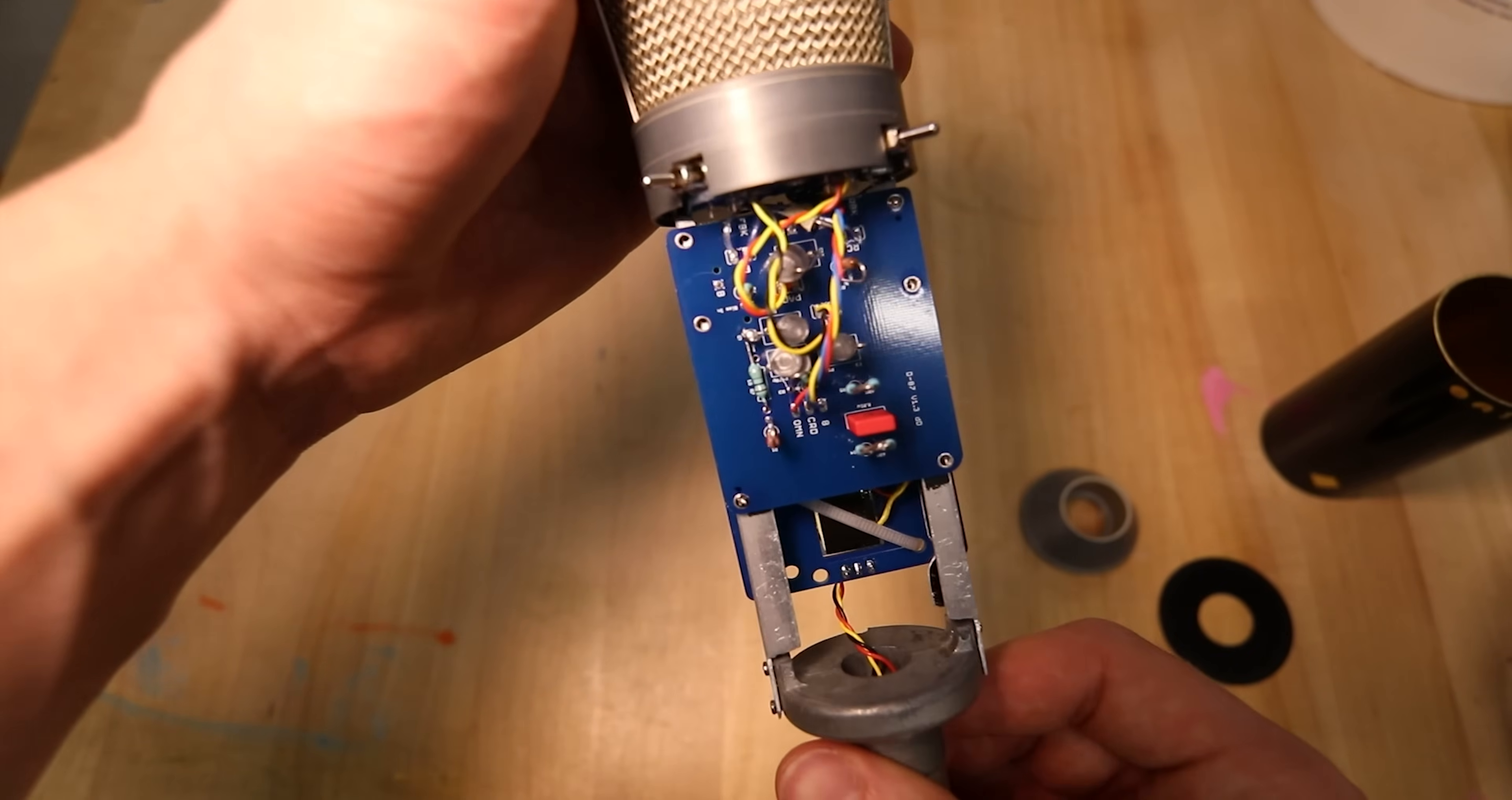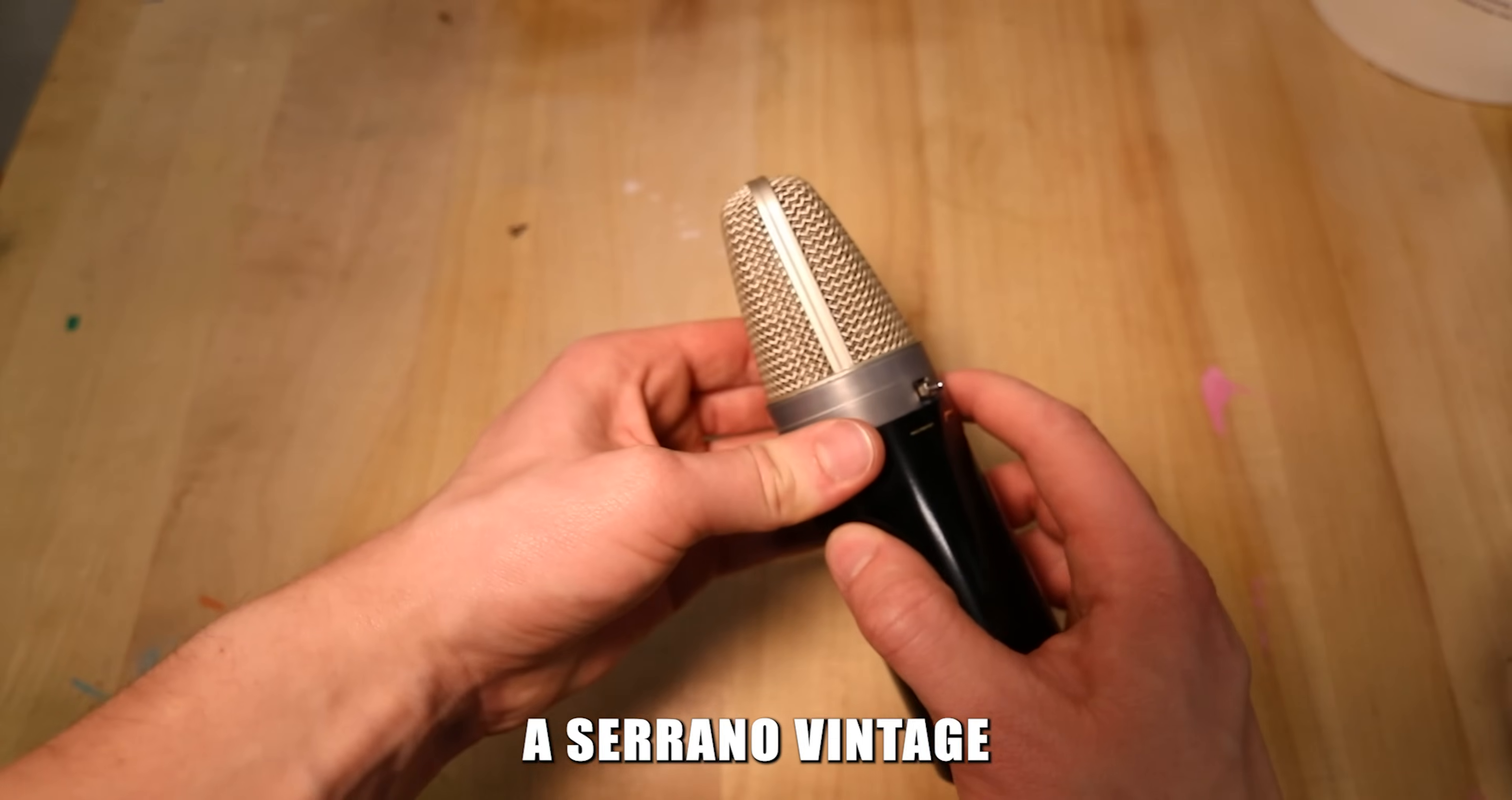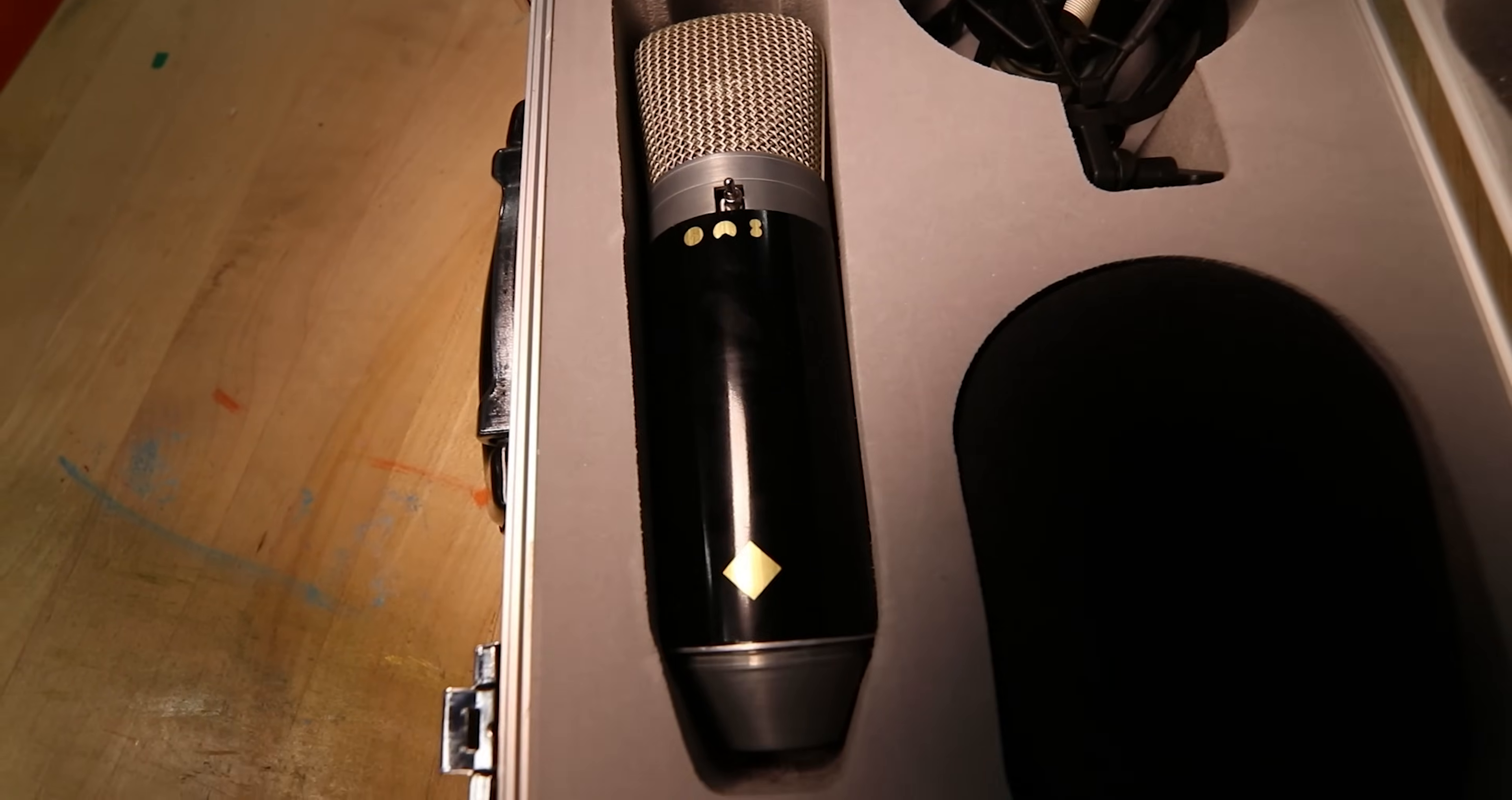Next time, I would start with an empty U87 style body instead of trying to modify a Behringer. I would also consider spending the $700 to get a Soliloqueen Vintage 87 if I could. From what I've learned, this is a really good replica for the price. You can expect a future comparison against the Neumann U87 AI once I get access to one.